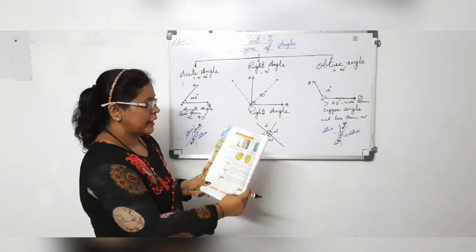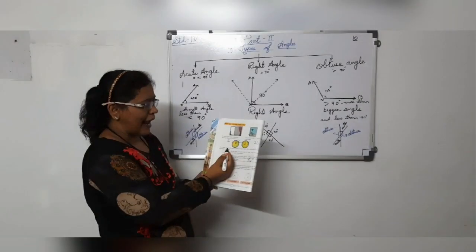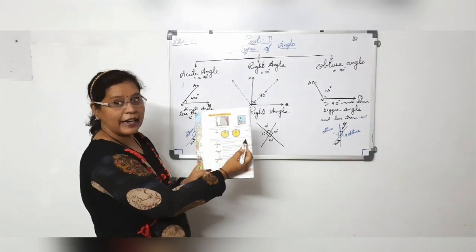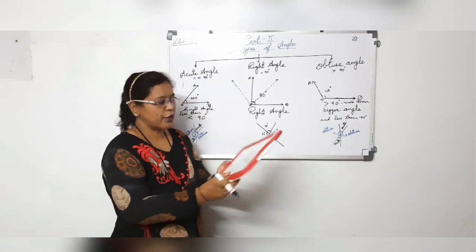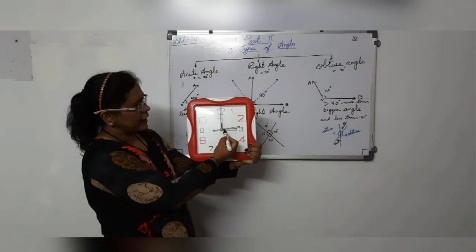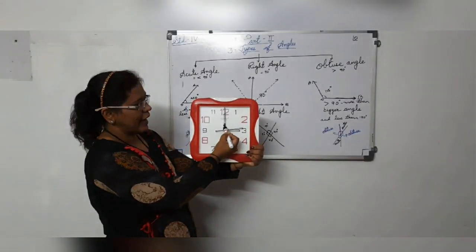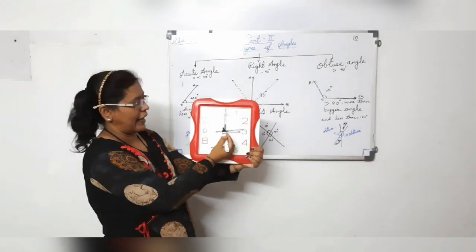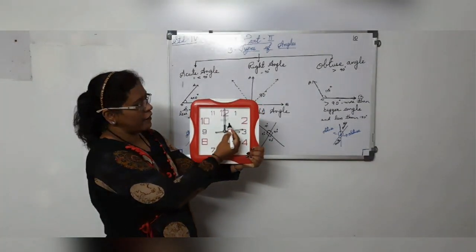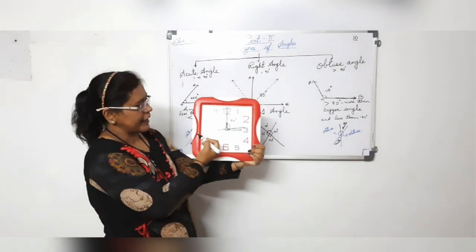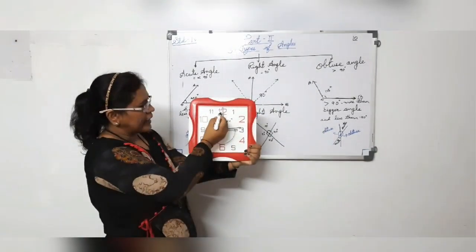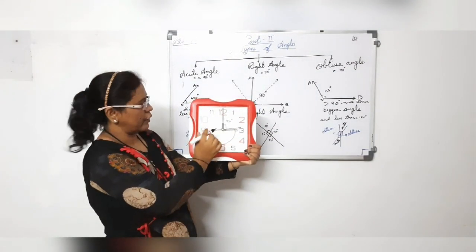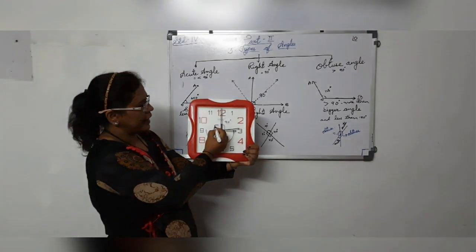Right angle is always 90 degrees. In a clock, at 3 o'clock, the minute hand and hour hand are at a right angle to each other. You can see on this watch — the hour hand is on 3 o'clock and the minute hand is on 12 o'clock, and it forms a right angle of 90 degrees. Similarly, if the hour hand is at 9 o'clock and the minute hand is on 12 o'clock, it also forms a right angle.